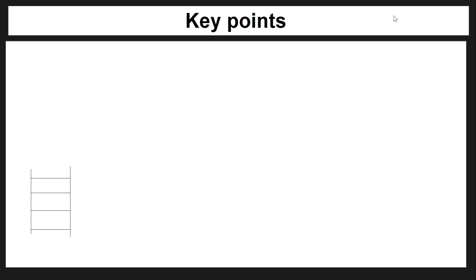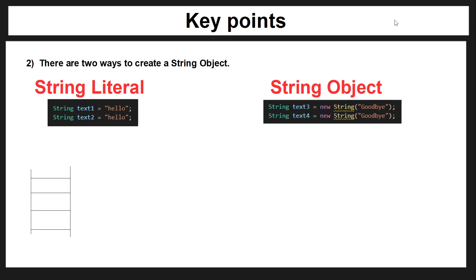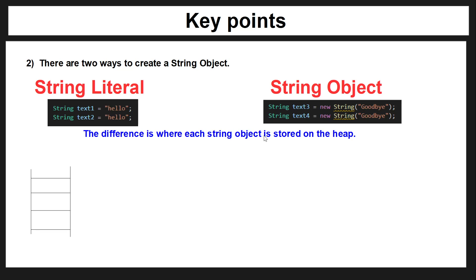The second key concept you need to know about strings is that there are two ways to create a string object: a string literal and a string object. A string literal is what we've been creating in our previous videos. A string object is when we use the new keyword with String and then the brackets. The difference between the two is where each string object is stored on the heap, and therefore how it behaves.